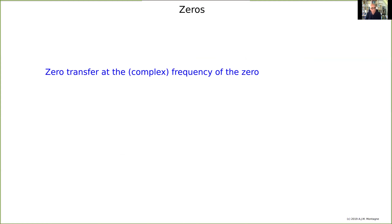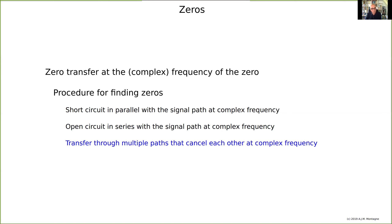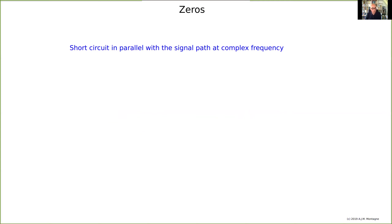Zeros are complex frequencies at which there is no transfer — zero transfer. Procedure for finding zeros: if there is a short circuit in parallel with the signal path at some complex frequency then there can be no transfer. Or if there is an open circuit in series with the signal path there also can be no transfer. It can also be that we have multiple paths for transfer but those transfers cancel at some complex frequency. Let's see some examples — short circuit in parallel with the signal path.